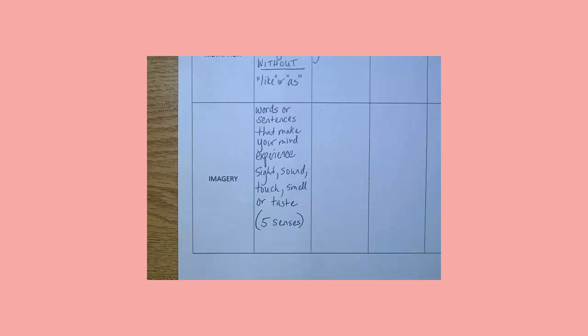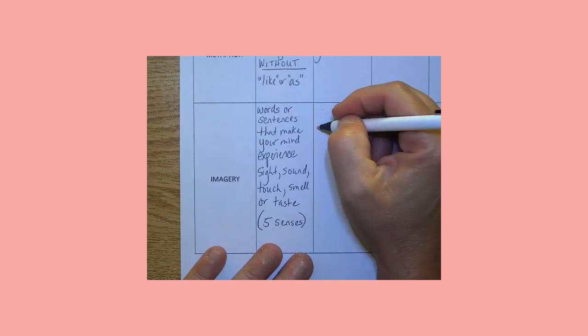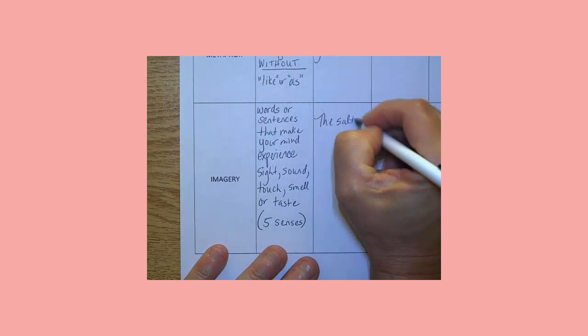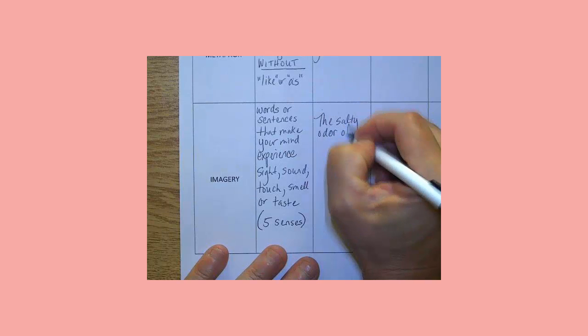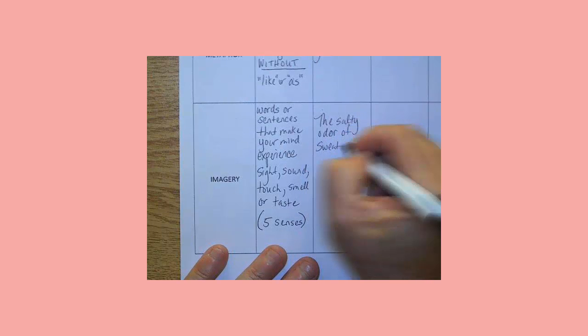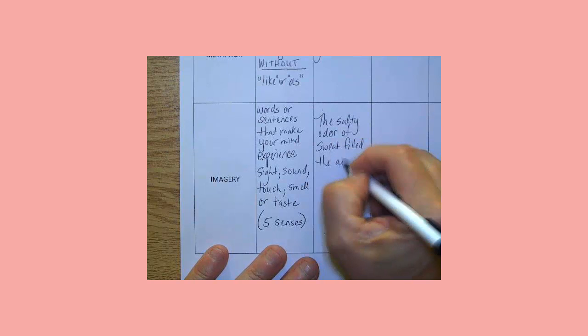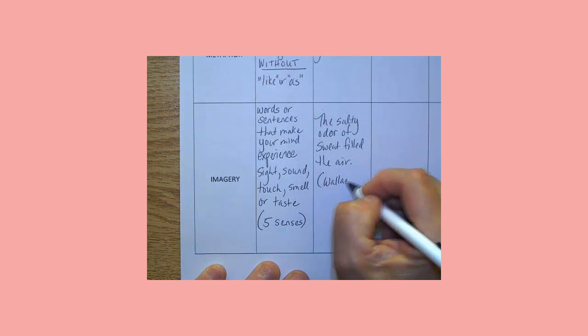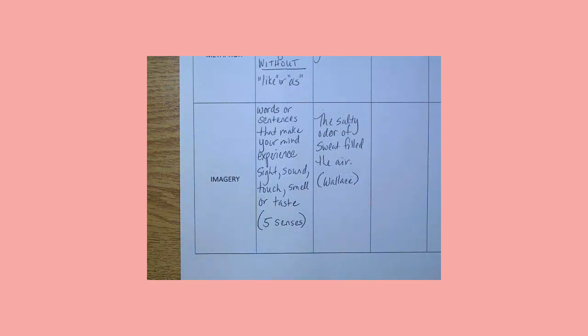When I was working on this yesterday, I immediately thought of that McDonald's poem. Last week we read a poem called You Can't Write a Poem About McDonald's, and that guy used a lot of imagery. A lot of visual things, a lot of smells, a lot of taste. So I decided to borrow a line out of his poem as my teacher example. He said, the salty odor of sweat filled the air. And since I borrowed this from his poem, we'll put his name in there. It was Wallace, who was the author. I got to give him credit because I didn't make that one up. The other ones I made up.